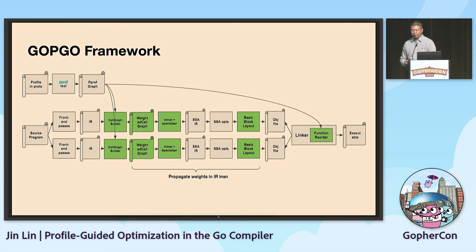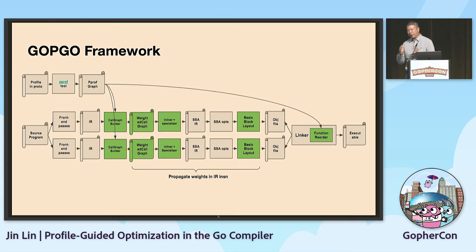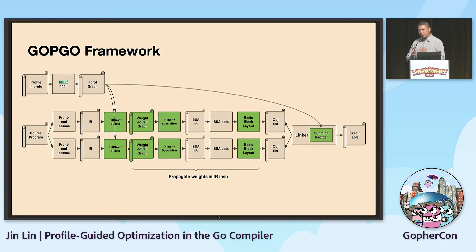Here is our profile-guided optimization implemented in the Go compiler. The compiler reads the pprof file and annotates the profile information on the AST IR. The compiler then builds a weighted call graph, so the inliner can do more aggressive transformation based on this weighted call graph. All optimizations on the AST IR need to maintain this profile information.